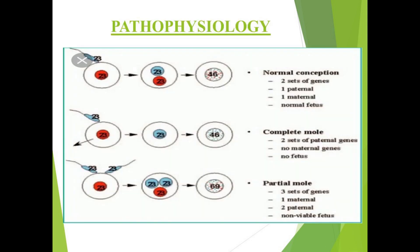Coming to the pathophysiology of the complete and incomplete mole: normally, sperm has 23 chromosomes and the ovum has 23 chromosomes. They fertilize and give rise to 46 pairs of chromosomes — two sets of genes, one from the maternal side and one from the paternal side — resulting in the normal formation of the fetus. The molar pregnancy is formed when there is a defect in the fertilization of the sperm and the egg.